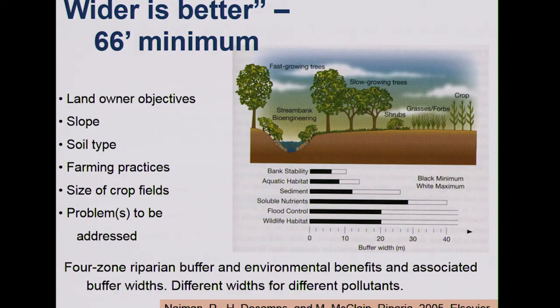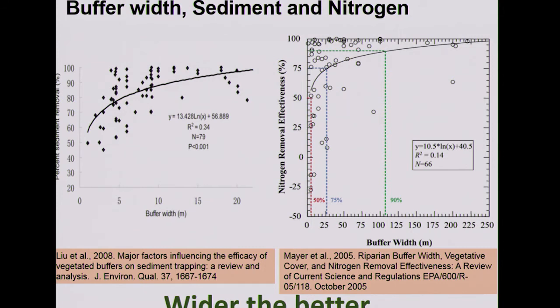Riparian buffers improve bank stability, reduce sediment, and reduce soluble nutrients, but different buffer widths are required. Two review studies using 17 to 120 papers examined the effect of buffer width on reduction of sediment and nutrients. The conclusion is clear: wider is better.